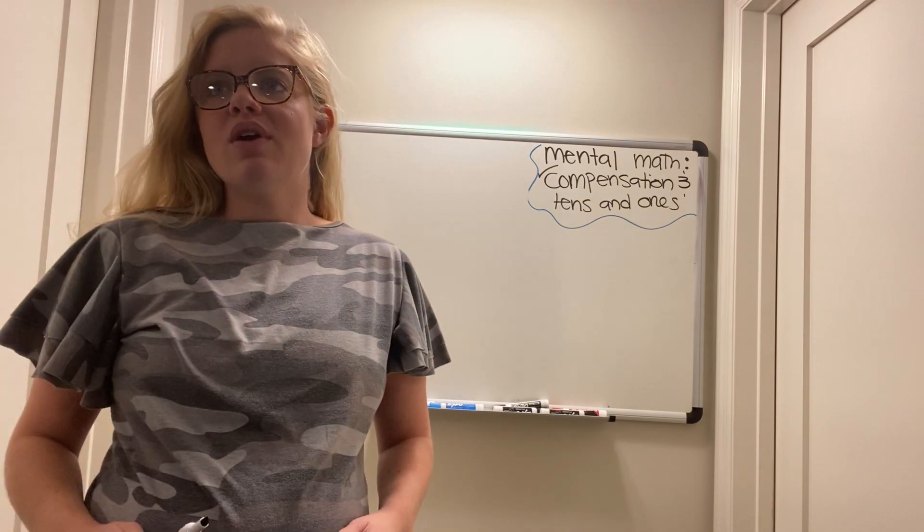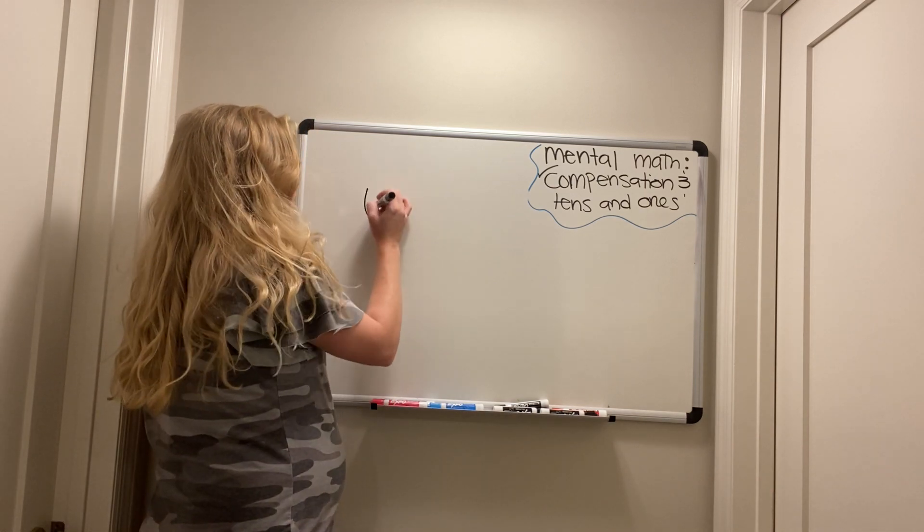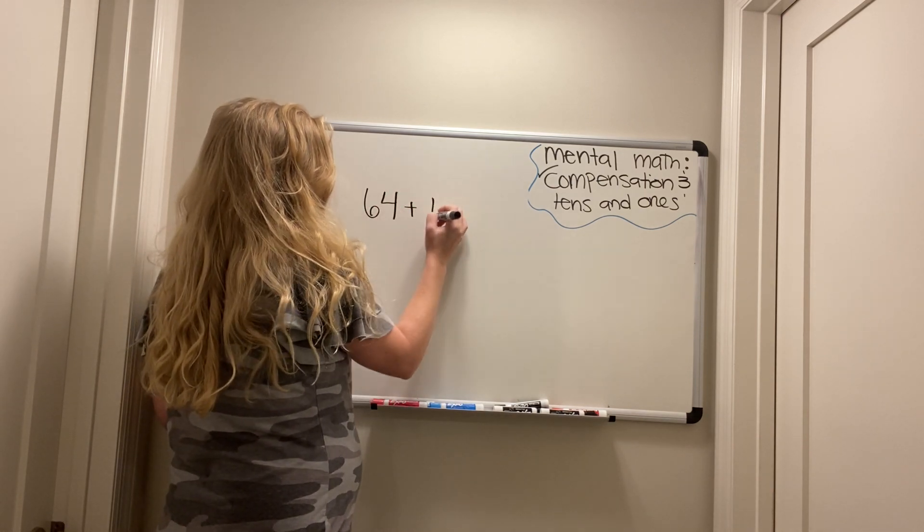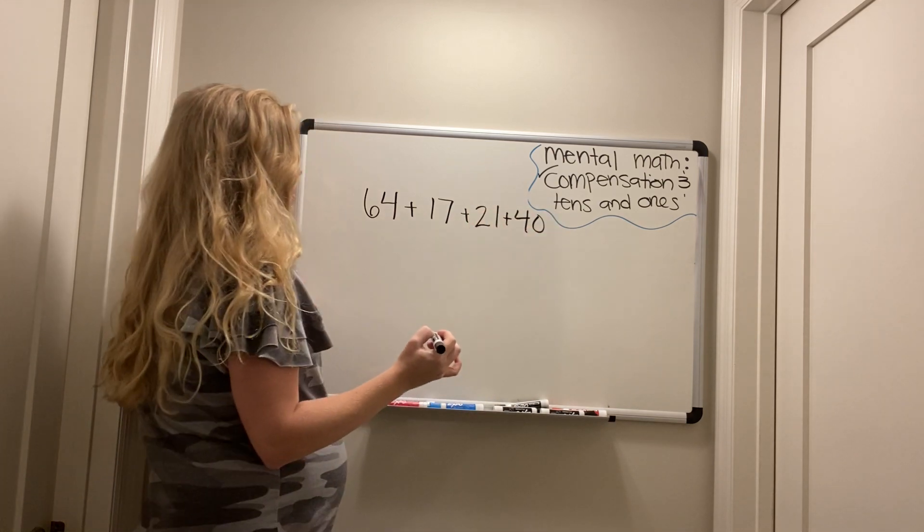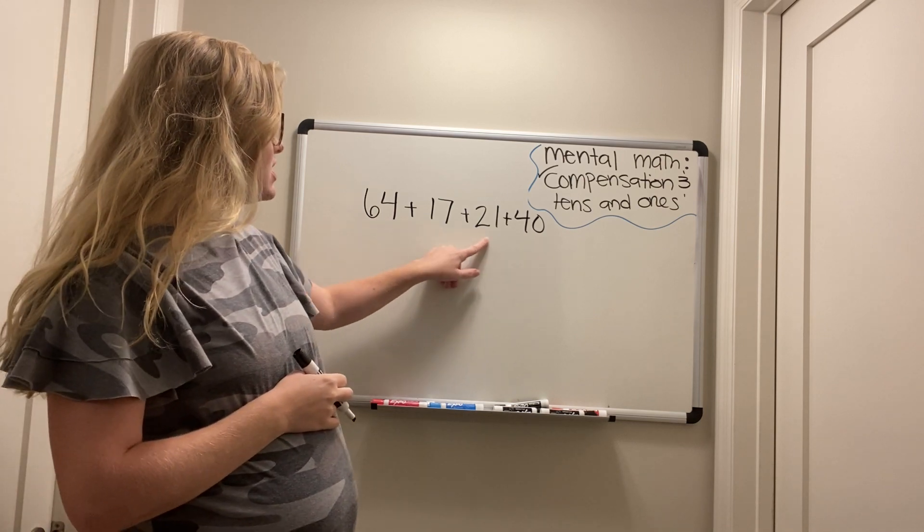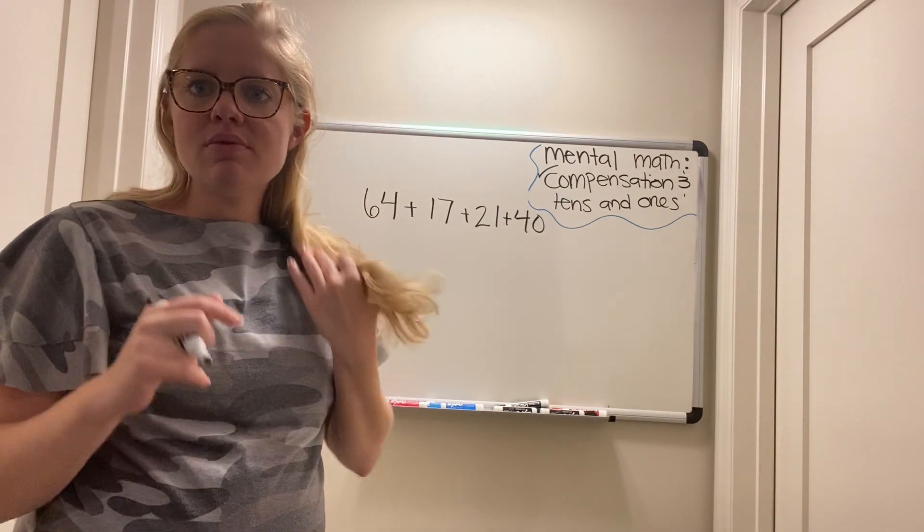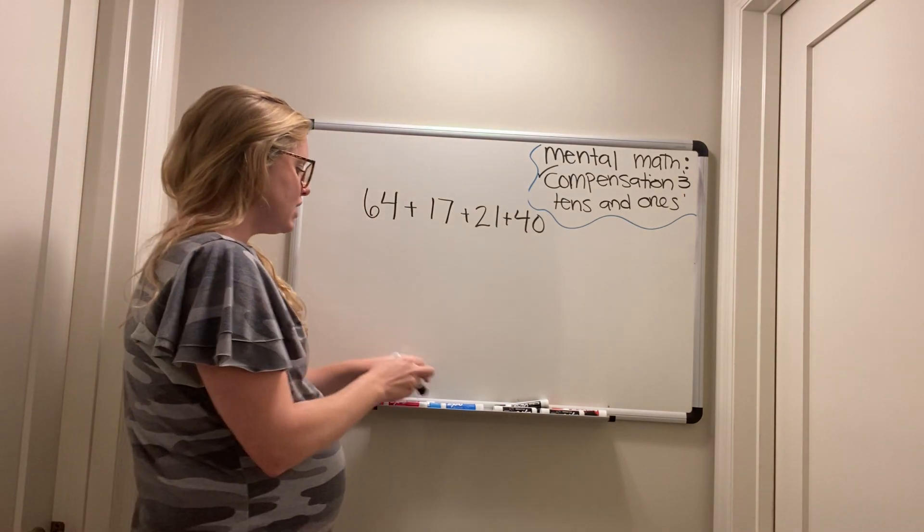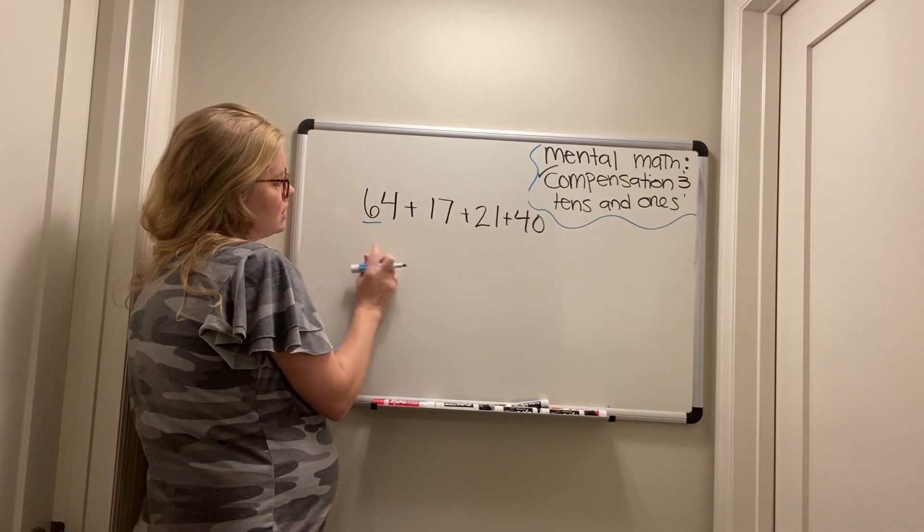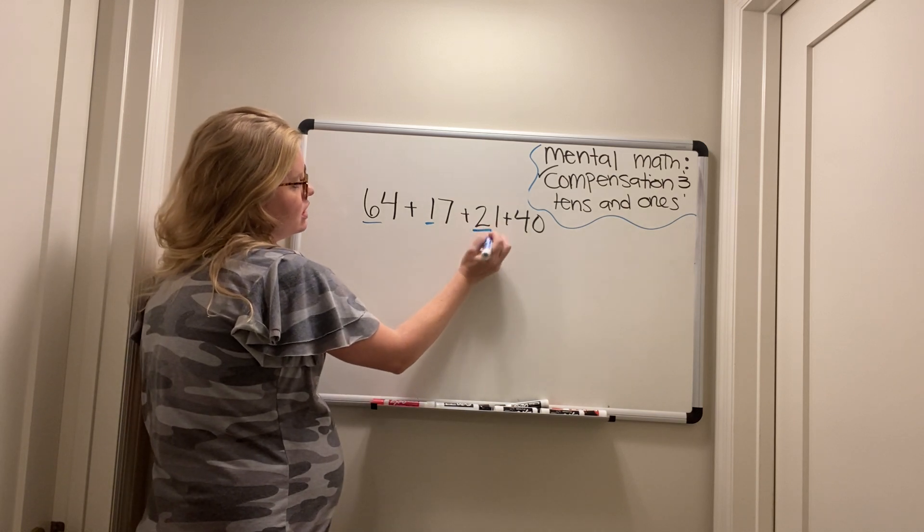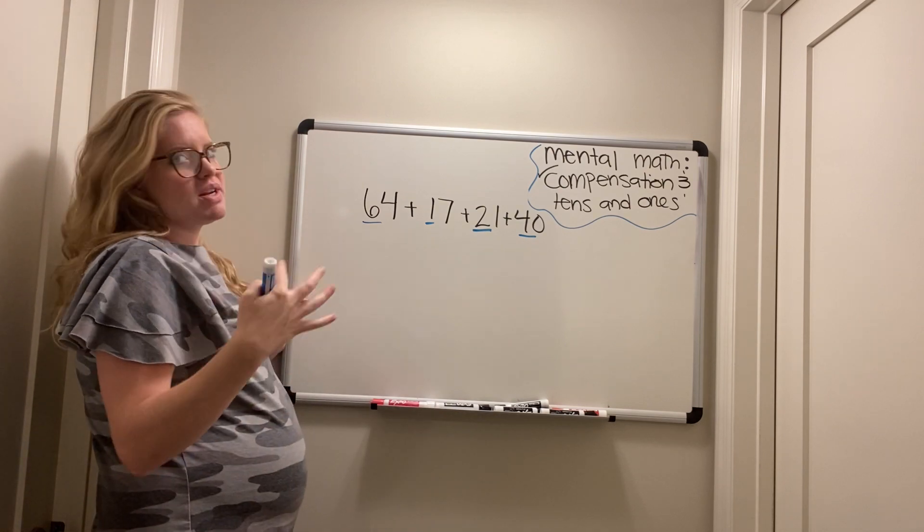Okay. So the tens and ones strategy for adding multiple numbers. Okay. So we're going to start with several two digit numbers. Okay. So we have 64 plus 17 plus 21 plus 40. And we call this the tens and ones strategy. We start with the tens. Okay. Let's look at all the tens that we have here. We have six tens, one ten, two tens, and four tens.